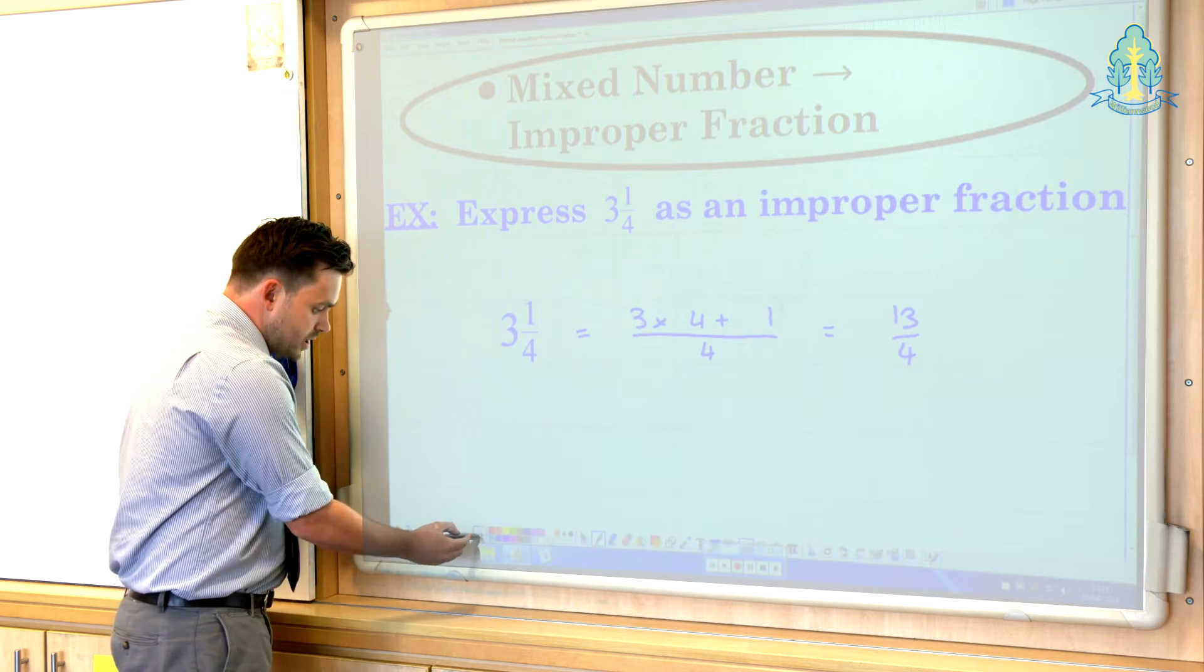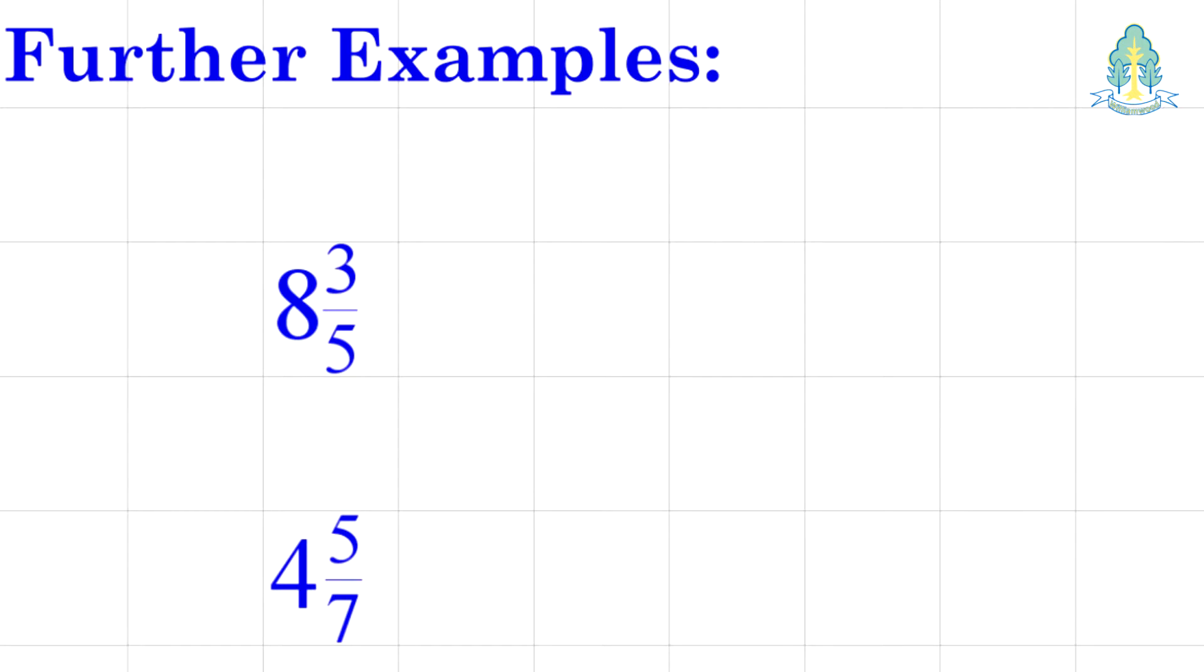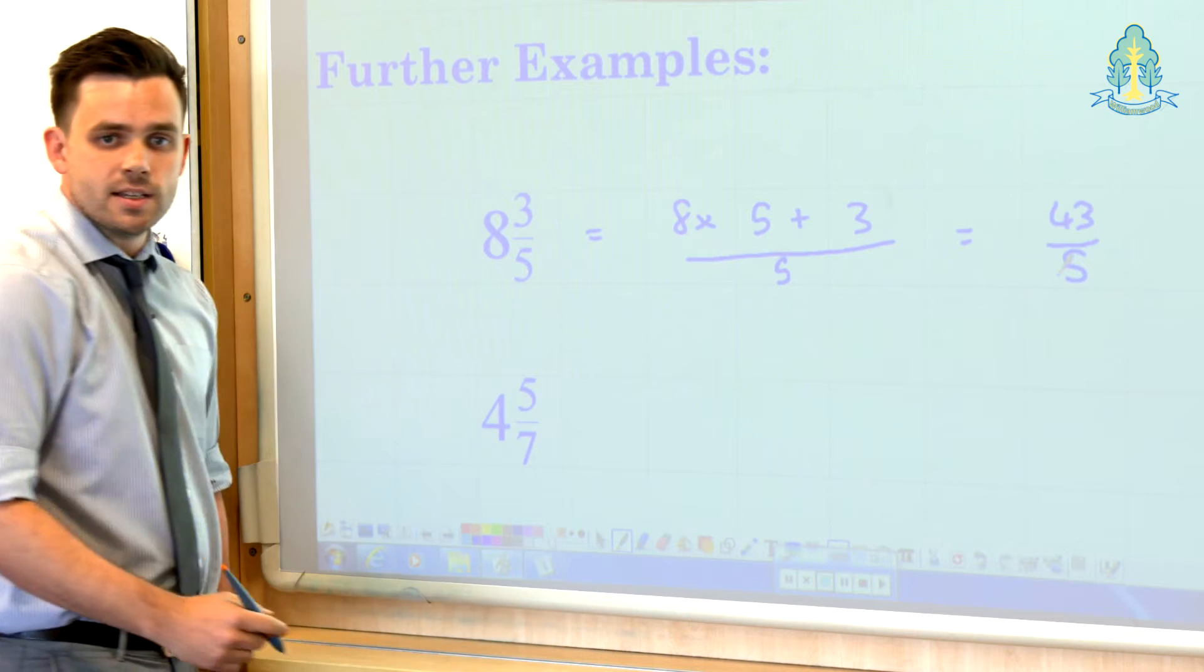Now a couple of further examples just to reinforce this. 8 and 3 fifths. We've got 8 for the whole number part, 5 for the denominator. So we have 8 lots of 5 fifths. We treat that as 8 multiplied by 5. Add on the extra 3 as it is in this case and the denominator is fifths. So 8 multiplied by 5, 40 fifths, add on 3 fifths, gives us 43 fifths as an improper fraction.